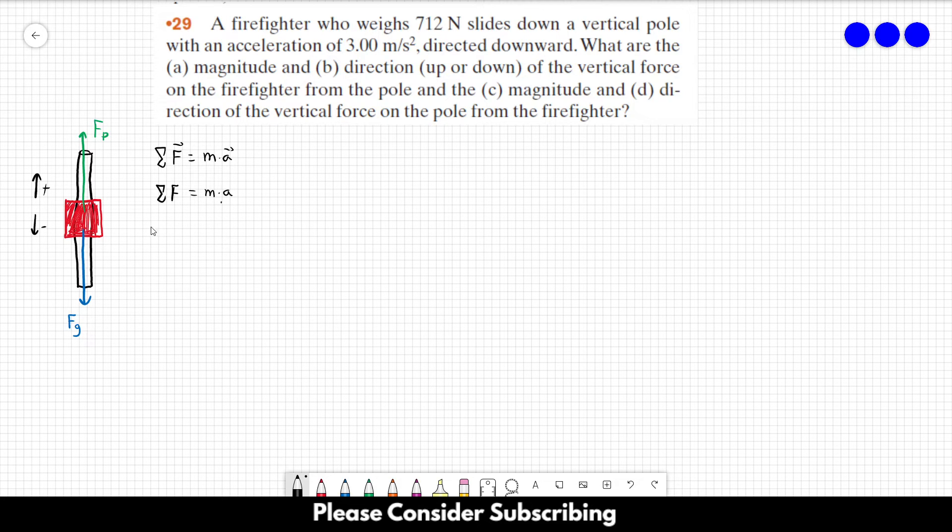OK, so we have two different forces. We have Fp, we have Fg, pointing in opposite directions. So that's why one is positive and the other is negative. This is equal to mass times acceleration.